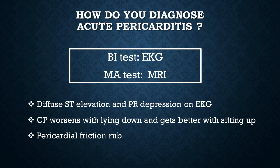And what is the most accurate test? MRI. Acute pericarditis presents with very distinctive EKG features. You will see diffuse ST elevations and PR depressions everywhere on the EKG — you cannot mistake this EKG for anything else. In the vignette, they might also tell you that the patient has chest pain that worsens with lying down and gets better with sitting up. You will also hear a pericardial friction rub with the stethoscope, which is the hallmark of acute pericarditis.